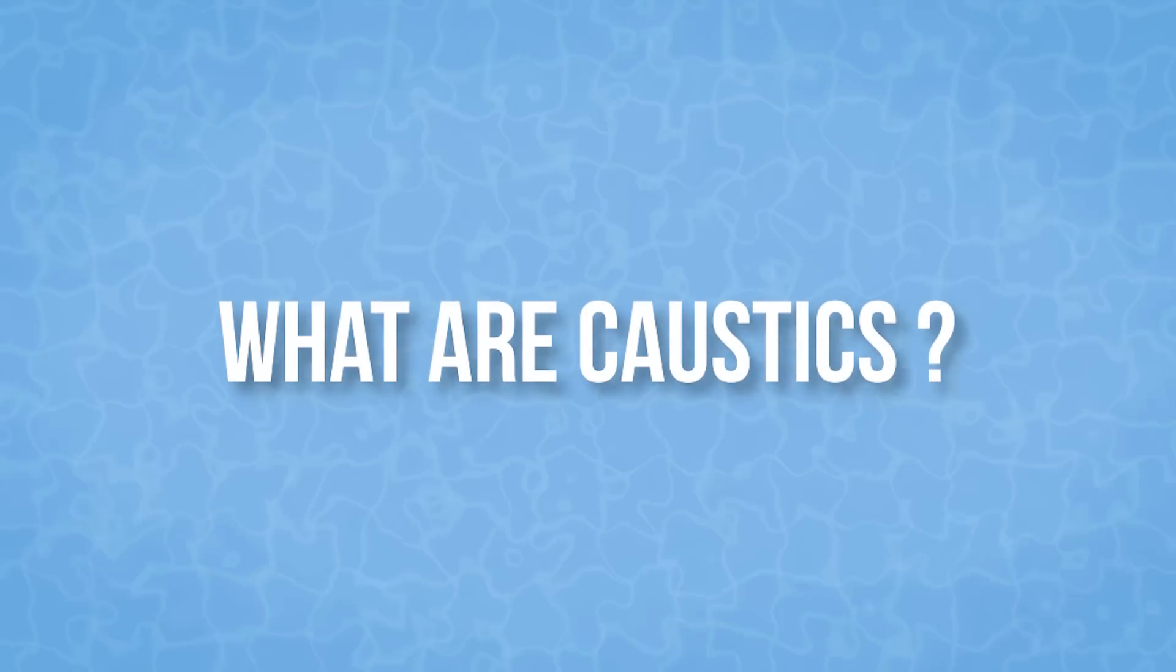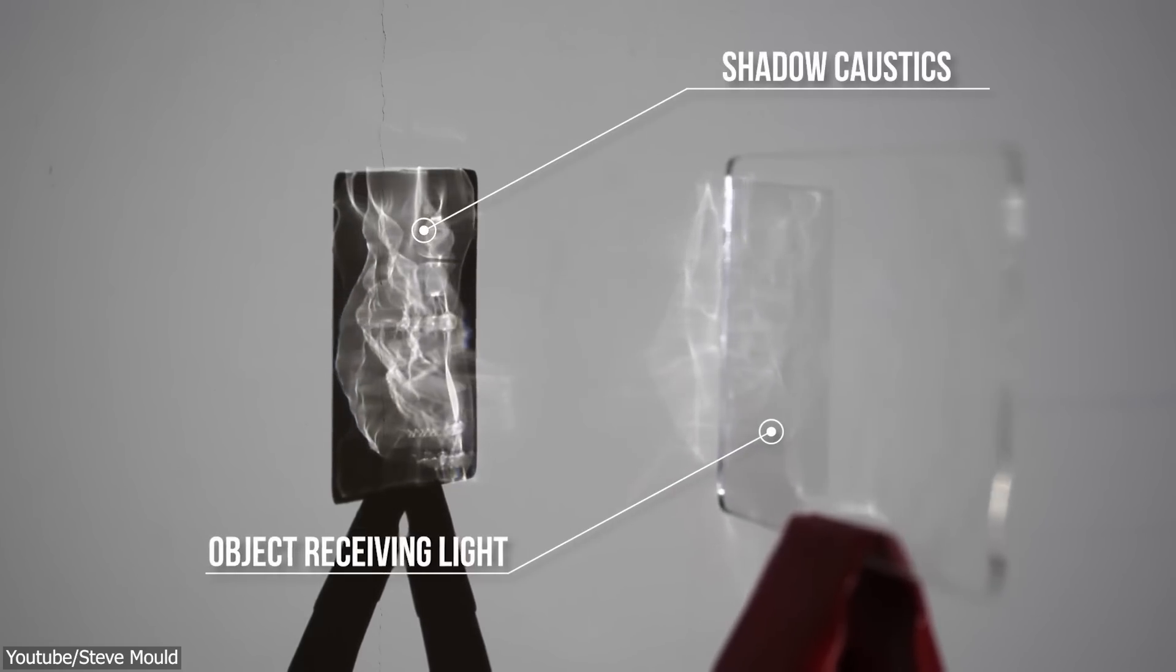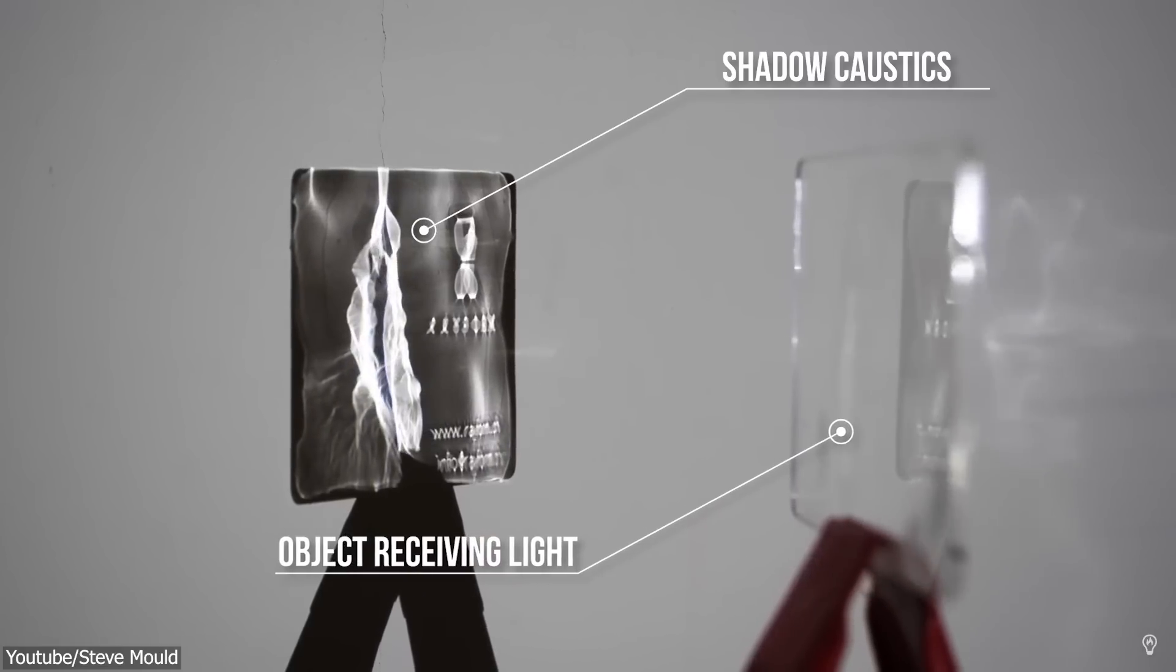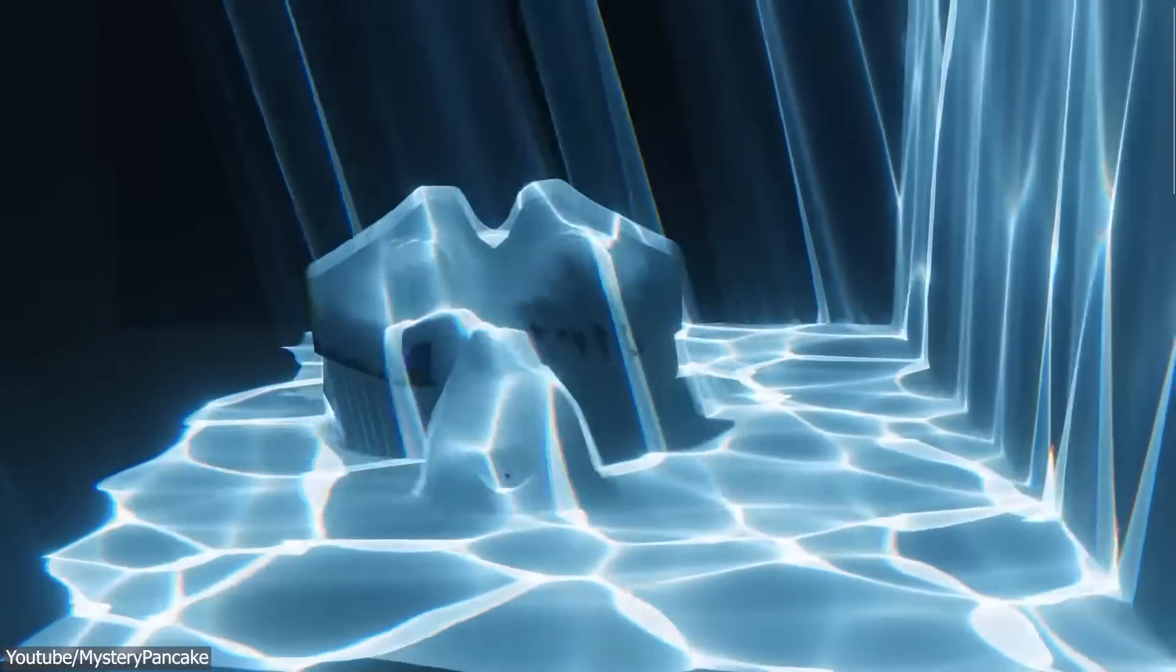Now, to get a better idea, I'm going to help you understand what this is. When light beams reflect or refract off a surface or pass through a transparent substance, creating bright or dark patches, this phenomenon is referred to as caustics in computer graphics.